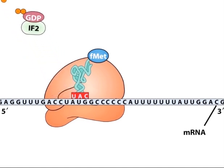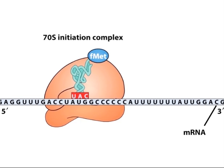The result is the formation of a 70S initiation complex that is ready to begin peptide bond formation during the elongation stage of translation.